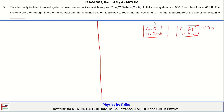The systems are then brought into thermal contact and the combined system is allowed to reach final equilibrium. Because the heat capacities are identical, for the combined system the heat capacity follows the same form. One system is at lower temperature and the other at higher temperature, so when brought together energy exchange takes place. The energy lost by the higher-temperature system equals the energy gained by the lower-temperature system in magnitude.